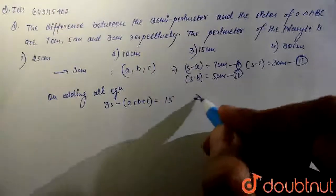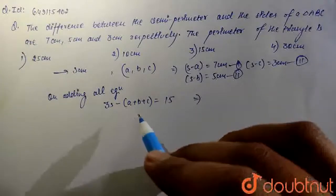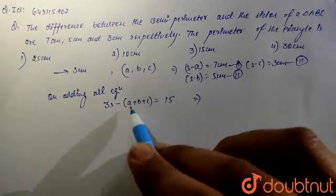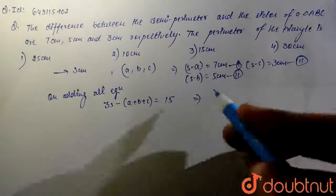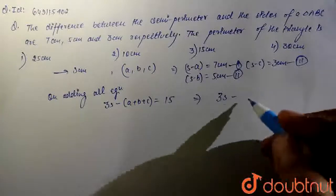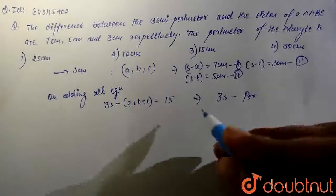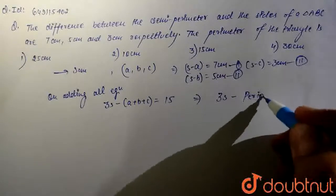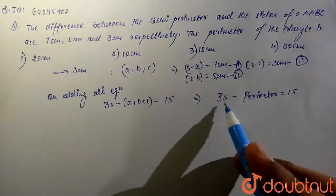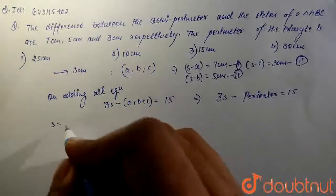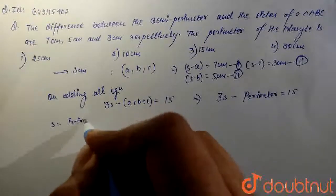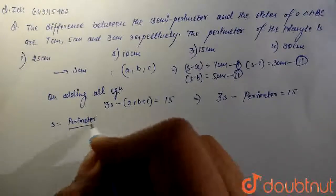Now, we know that the perimeter is the sum of the sides of a triangle, so A plus B plus C is the perimeter. That means 3S minus perimeter equals 15. And we know that the semi-perimeter S equals perimeter divided by 2, so semi-perimeter is half of the perimeter.